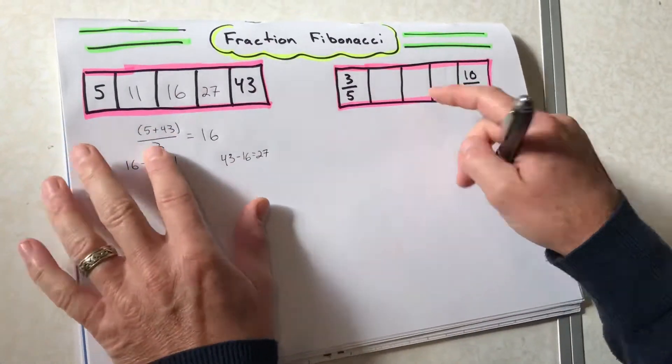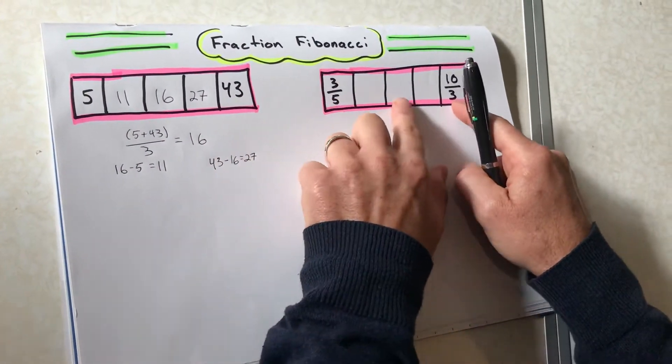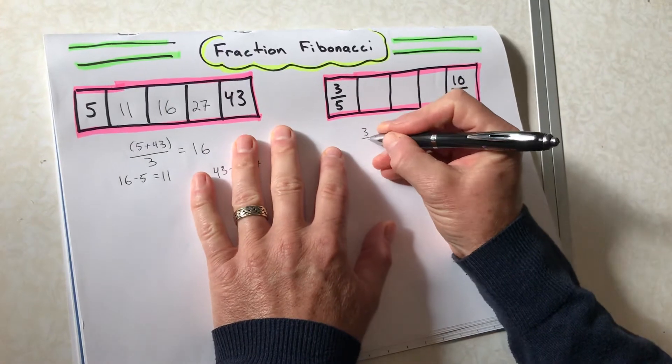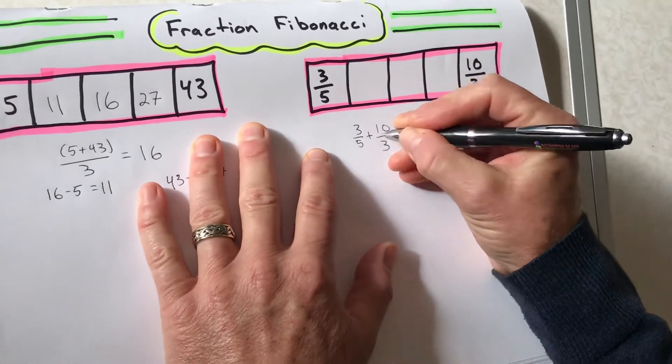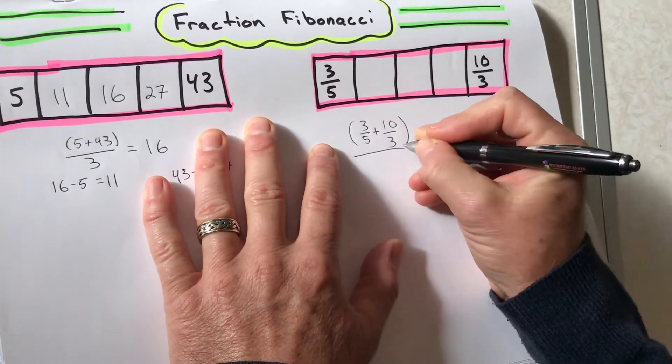So let's fill it in here. I wanna find this one. Well, that's gonna be the sum of these divided by three. So 3 fifths plus 10 thirds, and all of that is gonna be divided by three.